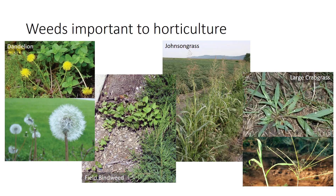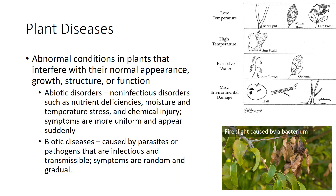Plant diseases are abnormal conditions in plants that interfere with their normal appearance, growth, structure, or function. There are two principal groups of diseases. Abiotic diseases are non-infectious disorders caused by nutrient deficiencies, damage to plant parts, chemical injuries, pollution injuries, and environmental conditions. Biotic diseases are caused by parasites or pathogens that are infectious and transmissible. The four main groups of disease-causing organisms are fungi, bacteria, viruses, and phytoplasmas. Typically, symptoms of disorders are more uniform and appear suddenly, compared to symptoms of biotic diseases, which are random on the plant and appear gradually.